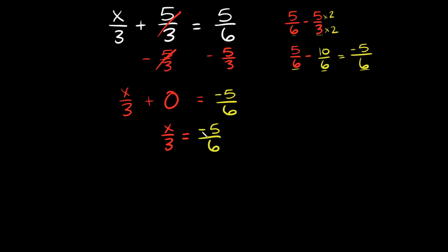Now we have a ratio set up, and the way you solve ratios is by cross-multiplying. In case you don't remember how to cross-multiply, you can draw a cross — it'll show you what numbers and variables you're going to multiply together. I'm going to multiply x times 6 and set that equal to 3 times negative 5.